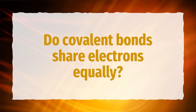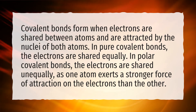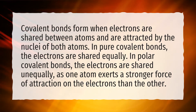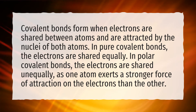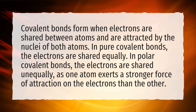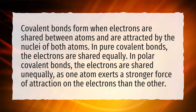Do covalent bonds share electrons equally? Covalent bonds form when electrons are shared between atoms and are attracted by the nuclei of both atoms. In pure covalent bonds, the electrons are shared equally. In polar covalent bonds, the electrons are shared unequally, as one atom exerts a stronger force of attraction on the electrons than the other.